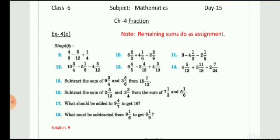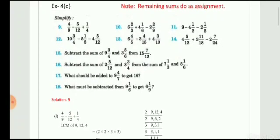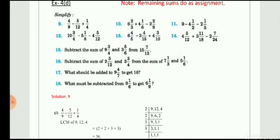Question number 9 — simplify. Simplify means you need to simplify by solving the sums. The fraction given is 4 by 9 minus 5 by 12 plus 1 by 4. These are fractions with different minus and plus signs. First of all, we need to find out the LCM of 9, 12, and 4. So we will get LCM 36.